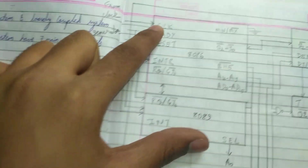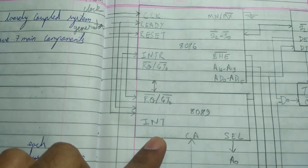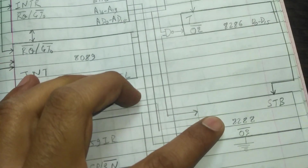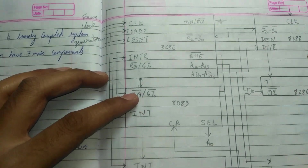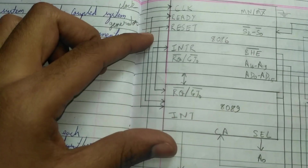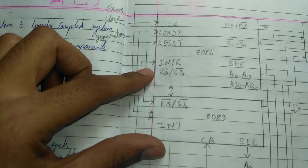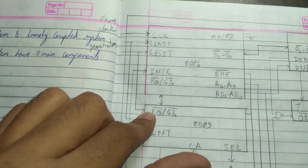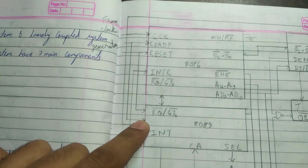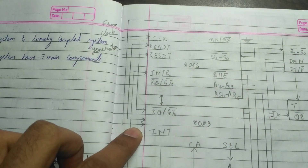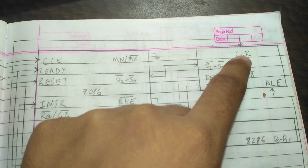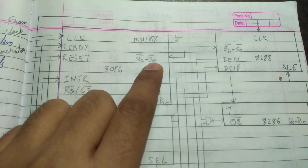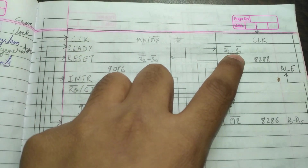I have shown you all the pins of each component. Now the last part is the joining — where the lines connect. The RESET pin is joined with this pin, the READY pin is joined with this portion, and the CLK is joined with this portion and also with the CLK of the 8288. MN slash MX bar is grounded, and S2 minus S0 bar is joined with the S2 minus S0 bar of the 8288.